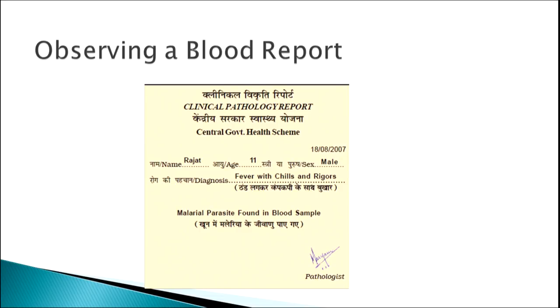Let's take this example: a blood report sample. You must have seen it in your EVS textbook of class 5, in the chapter titled 'A Treat for Mosquitoes', on page number 69. You can ask children to observe that blood report and answer questions like: when was this test done? Whose test is it? How old is the child? How do you know it is a blood test report? What is the finding in the blood test report? Observations are not always outside the classroom — observations are also inside the classroom, with many such examples in the EVS textbooks.